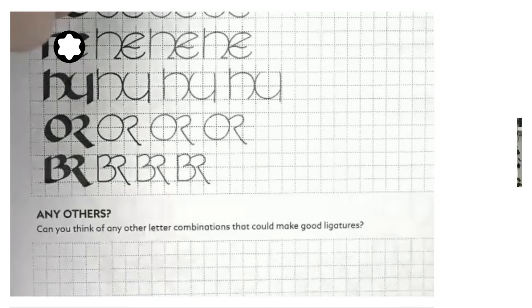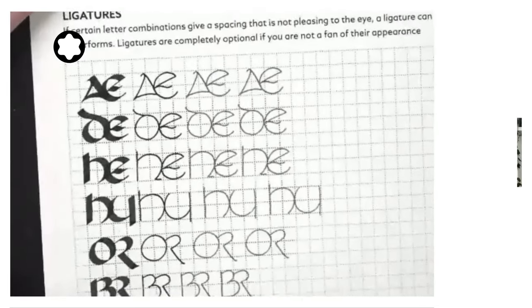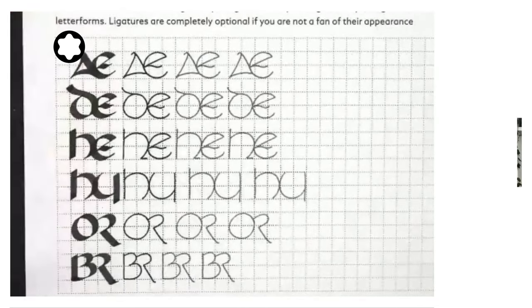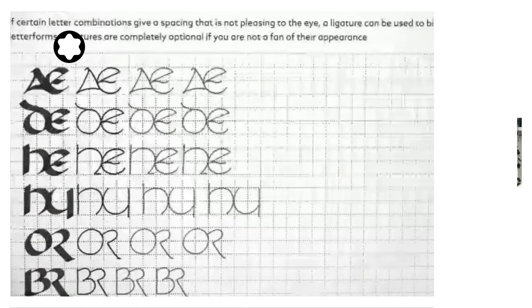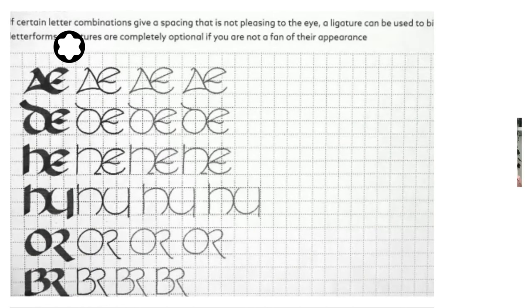Starting off with page number one for today, the last of the letter forms that we're going to work on is ligatures. When we get two rounded forms, they can create quite a bit of space or they can look far apart or draw the attention of our eye when we're writing.